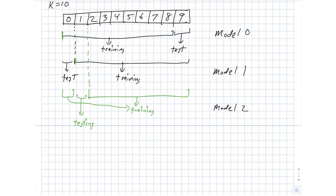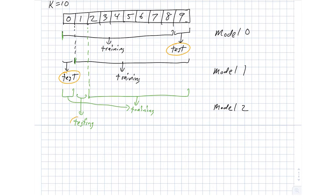For each model — model 0, model 1, model 2, and so on — we get a model performance statistic based on its test set. In the end, we have k different values, and if k is large enough we can start to get a good sense of what that distribution might look like.